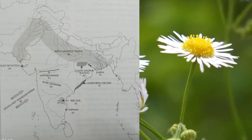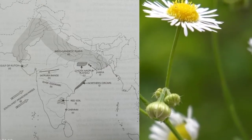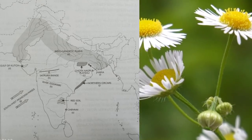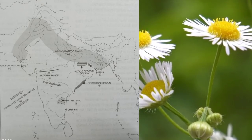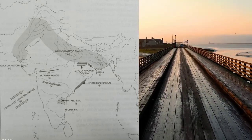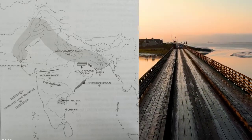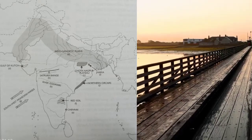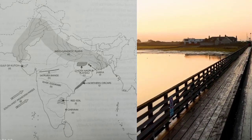Next outline map of India: 'A' — mark and name Chennai. 'B' — label the river Godavari. 'C' — label the Chotanagpur Plateau. 'D' — mark and name the Gulf of Kutch. 'E' — mark and name the Indo-Gangetic Plain. 'F' — label an area of red soil.